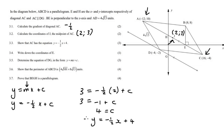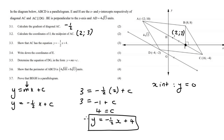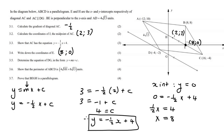So y equals negative a half x plus 4, and it said 'show that' — fantastic, we've done that. Next: write down the coordinates of E. E is the x-intercept of that line. To find an x-intercept you make y equal to 0. So 0 equals minus a half x plus 4, giving a half x equals 4, so x equals 8. The coordinates are (8, 0) — don't just say 8, include that y is 0.